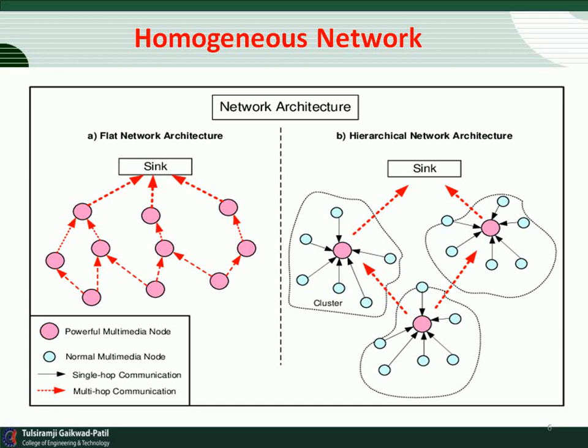The choice of a particular communication protocol depends on the specific application. The first figure on the left-hand side shows the flat network architecture. The sensor nodes are assumed to be stationary, distributed in a targeted area, and the collected sensing information is gathered at the base station. There is direct communication from the sensor node to the base station.